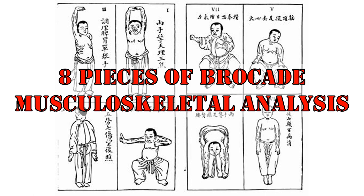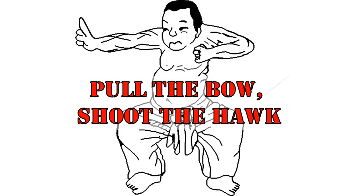We're going to move on to the second movement of the Eight Pieces of the Brocade. This movement is referred to as pull the bow and shoot the hawk.